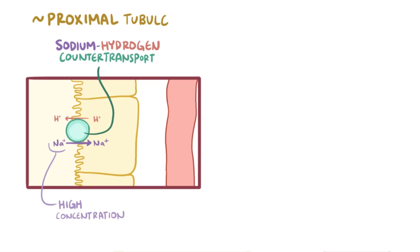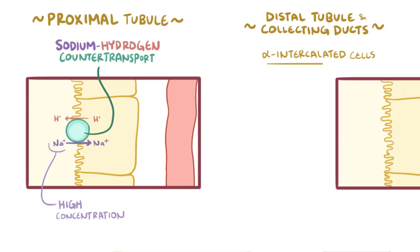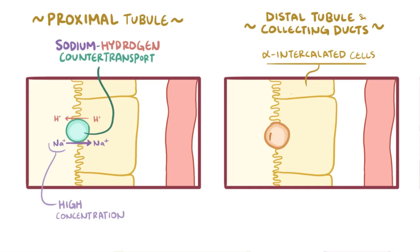Remember, this is in the proximal tubule, but in the distal tubule and collecting ducts there's another mechanism that involves alpha intercalated cells. These cells have a different pump that uses the energy of ATP to push hydrogen ions into the tubule.